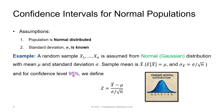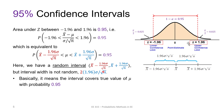For the 95 percent confidence interval, we standardize the normal distribution by removing the mean and dividing by the standard deviation, making it the standard normal distribution with mean zero and variance one. The area under the z-curve between minus 1.96 and 1.96 corresponds to the 95 percent interval, because the probability of being in that range is 0.95. We find this by taking the inverse of the Gaussian.